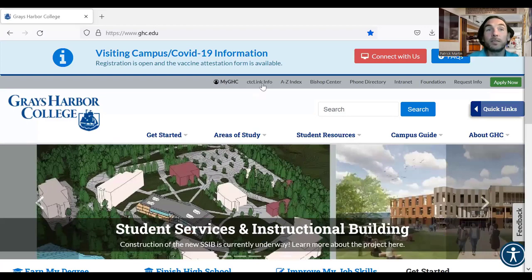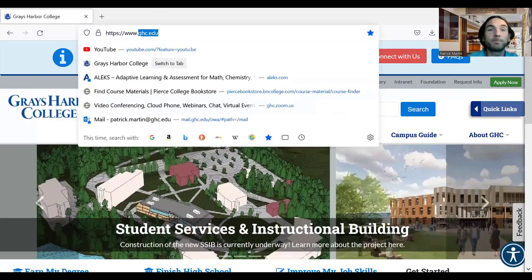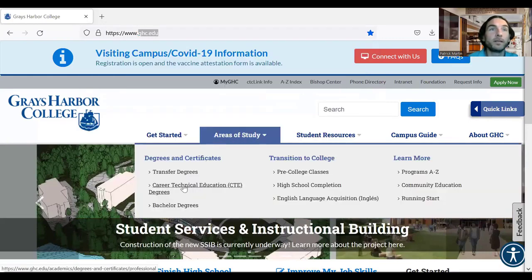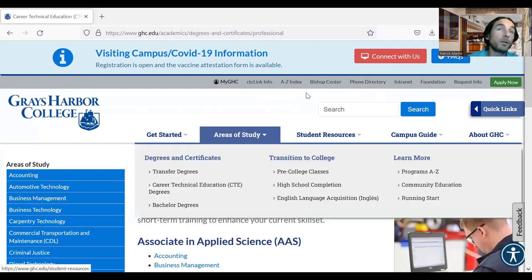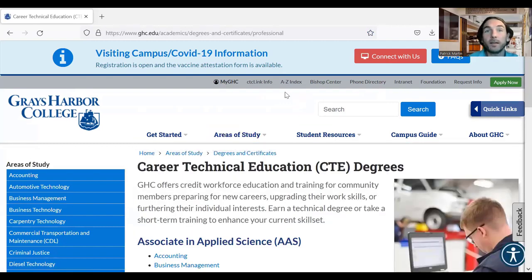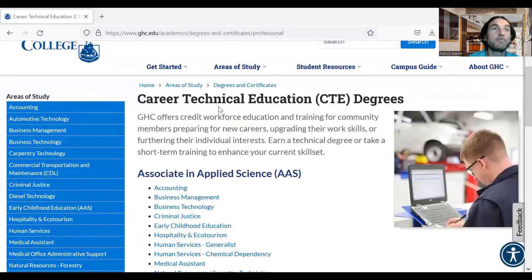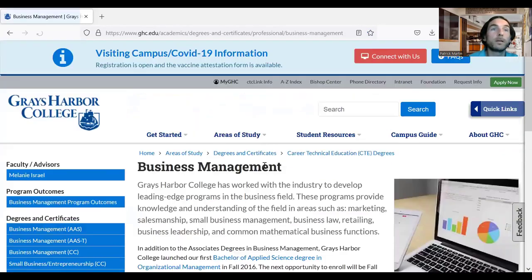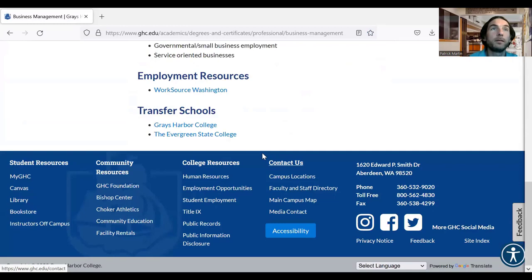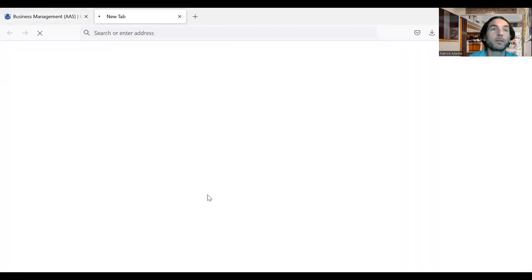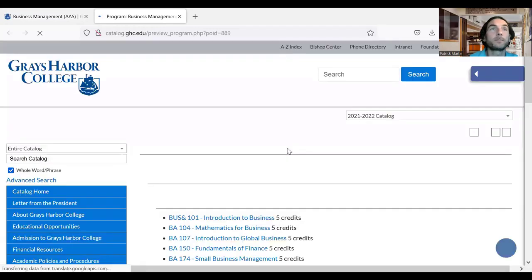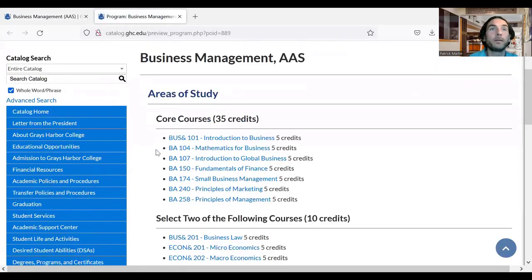You can see all specific requirements by going to ghc.edu, then areas of study, then career technical education degrees. For example, to get an Associate of Applied Science in Business Management, let's go here. Have a look at the course list. We need Math for Business.